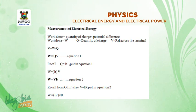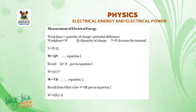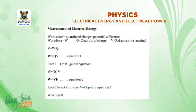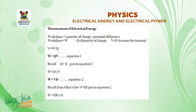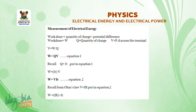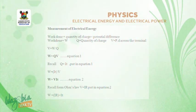From Ohm's law, V = IR. Substituting into W = VIt gives us W = I²Rt. This is another formula for electrical energy derived from Ohm's law.